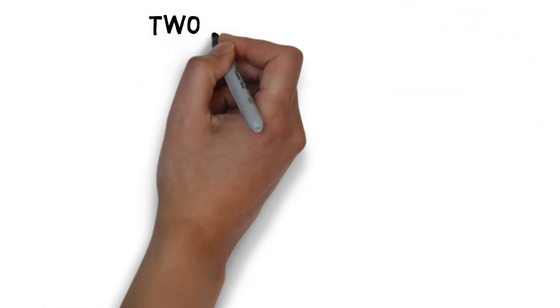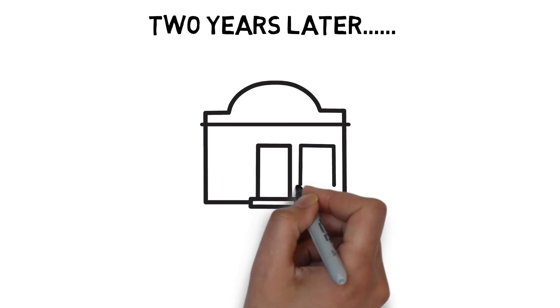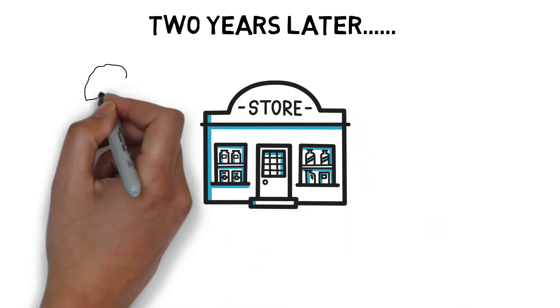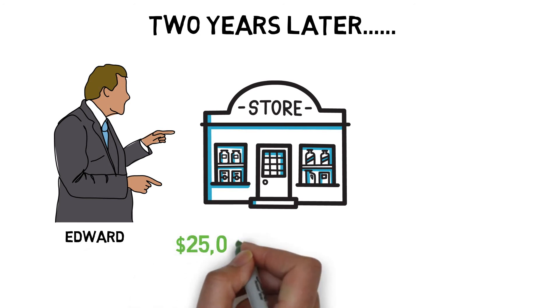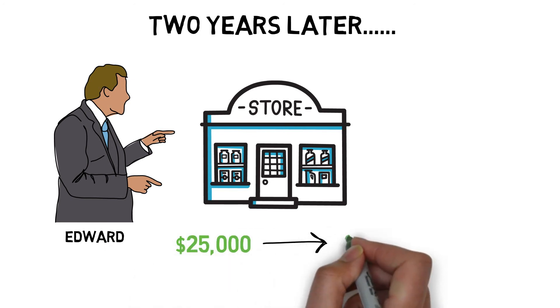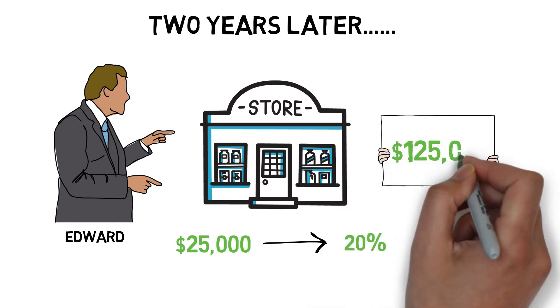Two years later, John's store is making pretty good profits. Another businessman, Mr. Edward, was interested to buy 20% of the company. Edward was willing to pay $25,000 for 20% of the company. The business is now valued at $125,000.